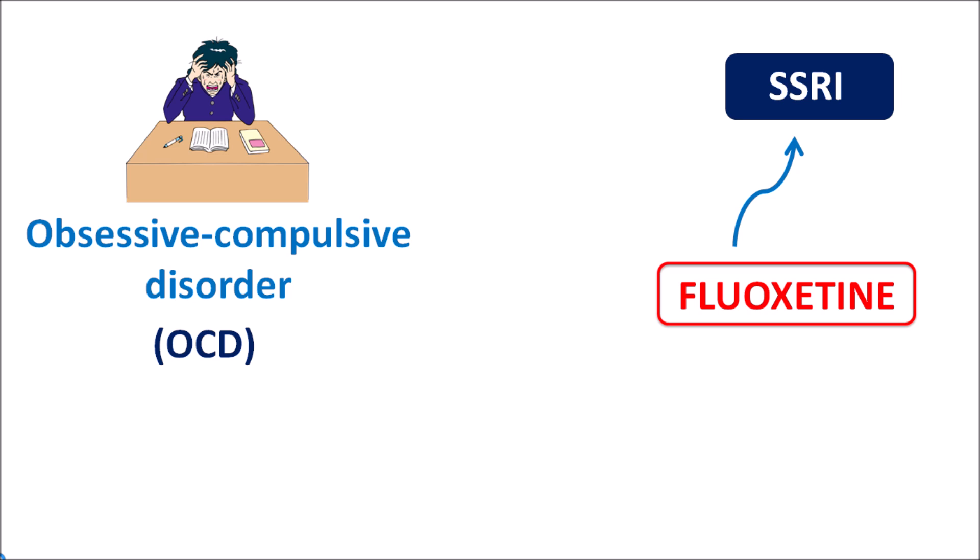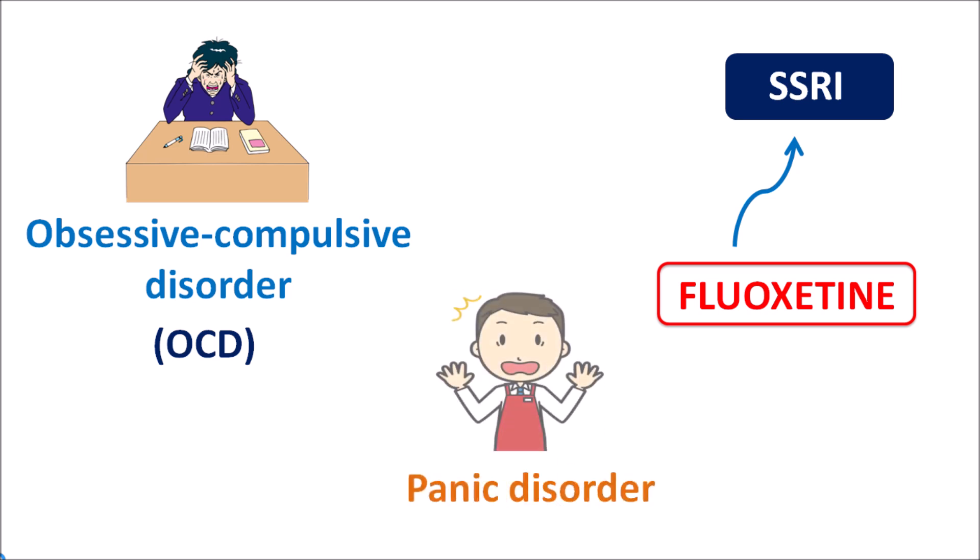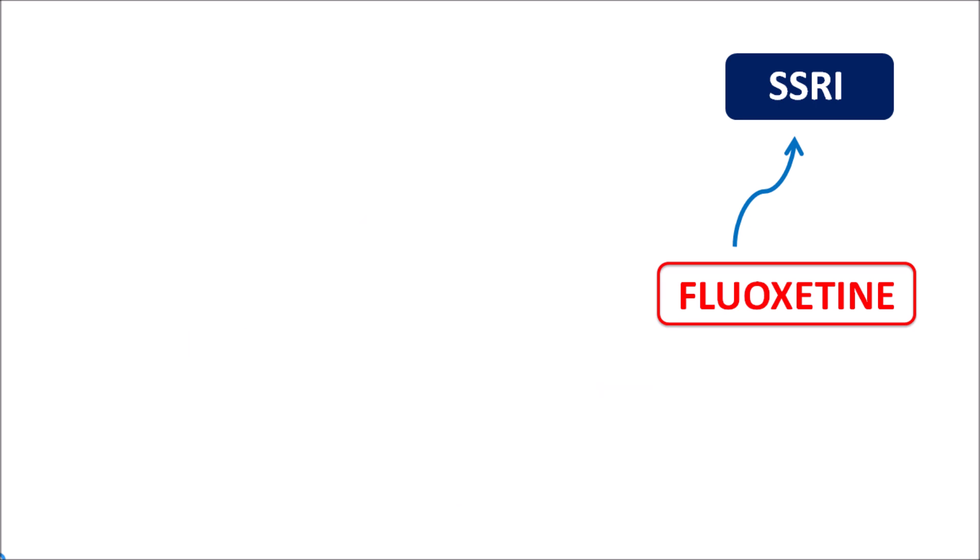Similarly, this drug can also be used for another anxiety disorder — panic disorder. This is a condition where anxiety is associated with panic symptoms like sweating, tremor, and increased heartbeat. All such conditions associated with anxiety can be controlled by fluoxetine.